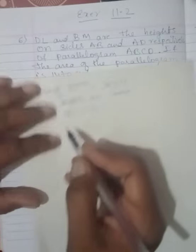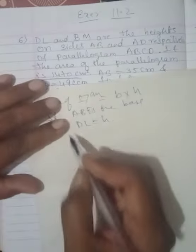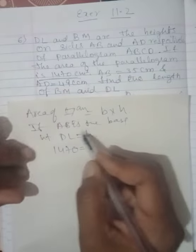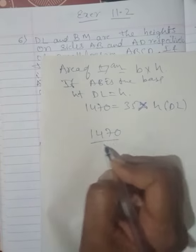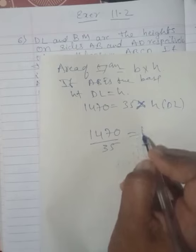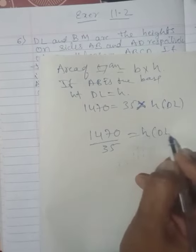So area, it is given. Area is how much? 1470. You write 1470. Base is how much? It is AB, 35, is equal to, sorry, into DL is height. You can write height this way. I will show the calculations here. 1470, this 35 comes down. This is height, or the DL, what we are calculating.